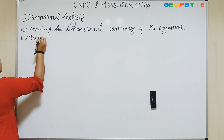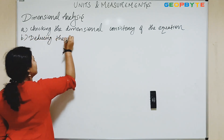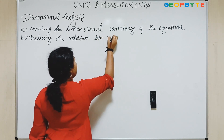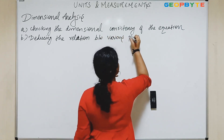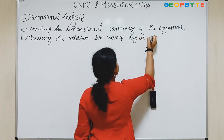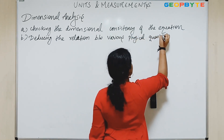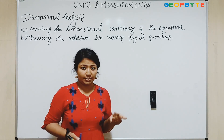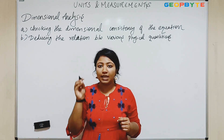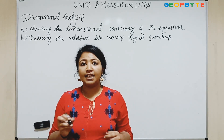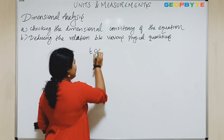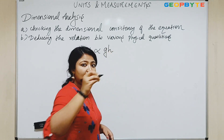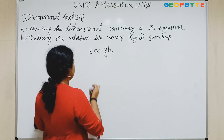The second point is deducing the relation between various physical quantities. For example, if I am dropping an object from vacuum, the time taken will depend upon the acceleration due to gravity and the height at which I drop that object. So I can write: time is equal to A times G to the power X times H to the power Y, where A is the proportionality constant. Because I don't know how this is related — whether it is directly proportional to the first power, or G squared, or H squared, or G to the power 3/2, or H to the power 5/7 — it can be anything.